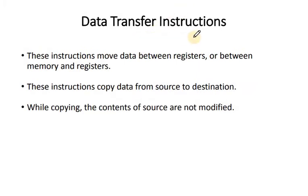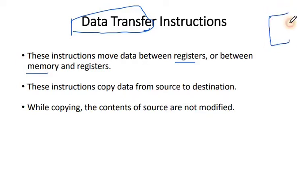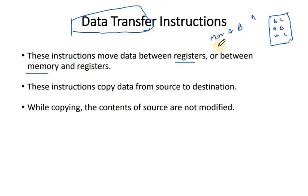Data transfer instructions are self-explanatory. They move data between registers, and between memory and registers. For example, B to A move, or B to C move. It may also be between memory and registers — for instance, memory location to A, or A to memory location (Move M, A means accumulator to memory location).